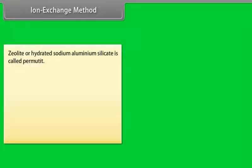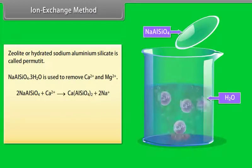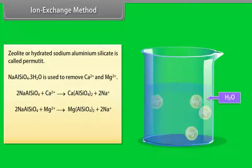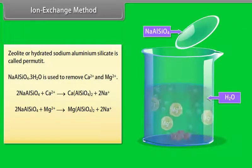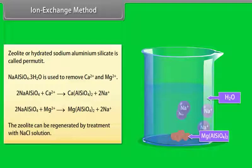Ion exchange method: Zeolite, or hydrated sodium aluminum silicate, is called permutit. NaAlSiO4·3H2O is used to remove Ca2+ and Mg2+. The zeolite can be regenerated by treatment with NaCl solution.